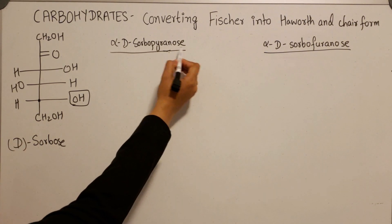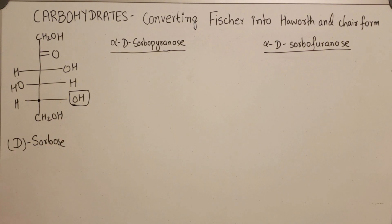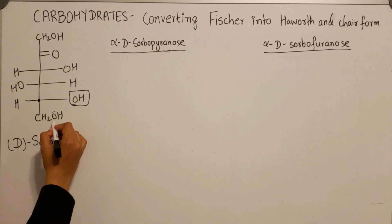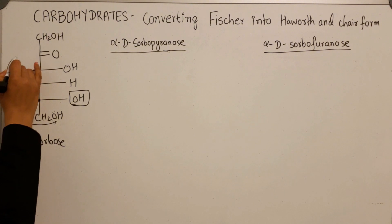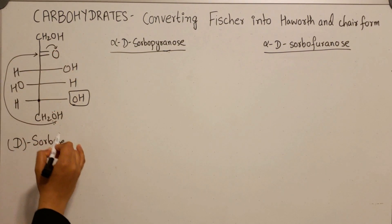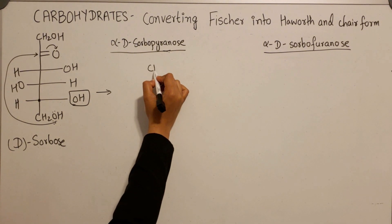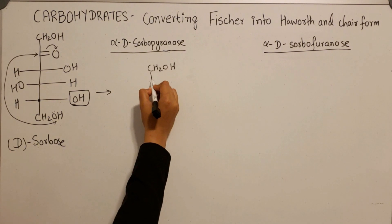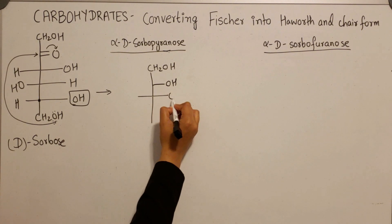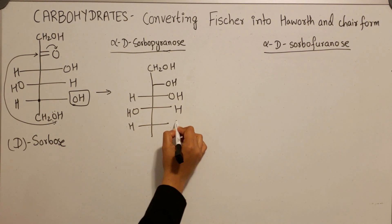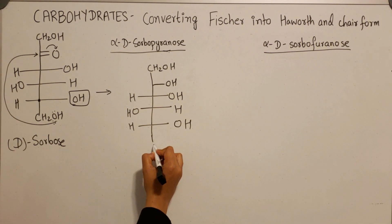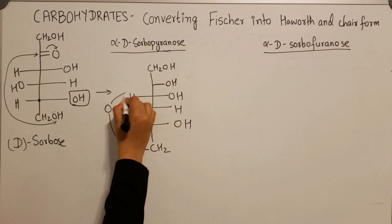The question asks for the pyranose form, which is a six-membered ring containing oxygen. We have to find which hydroxy group is responsible for generating the six-membered ring structure — that is the hydroxy group attached to the primary alcohol. These lone pairs attack the electrophilic carbonyl group and generate an immediate product.